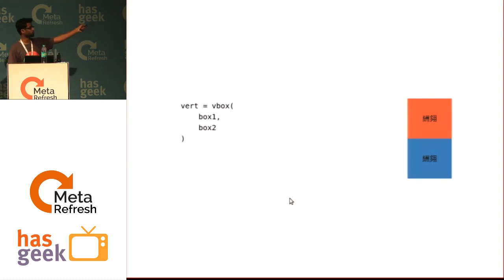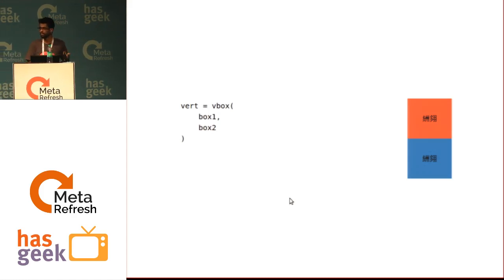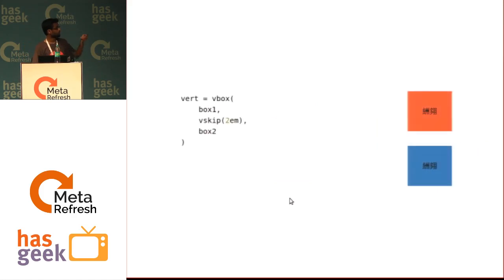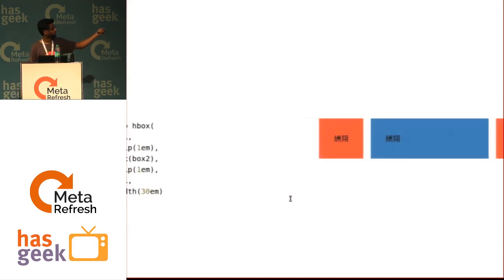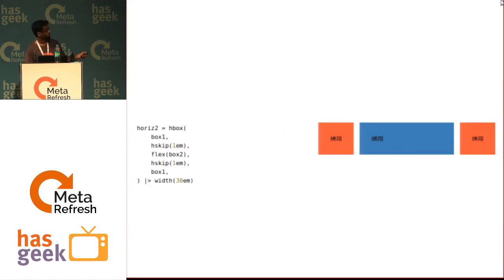You say VBox, box one, box two, and you get them aligned vertically — similar to TeX or LaTeX if you have used it. I can give a spacing between the two boxes by just saying VSkip 2-EM, and it gives me a 2-EM spacing. The same thing can be done horizontally: HBox, box one, 2-EM skip, and box two.